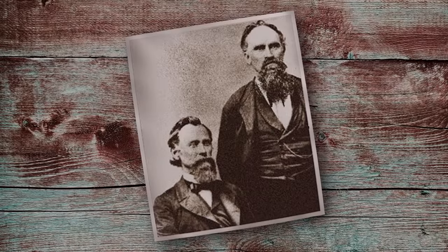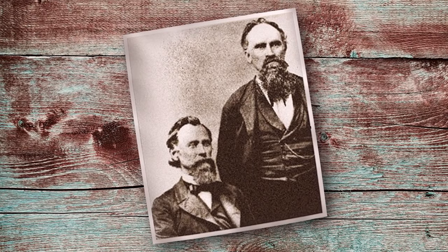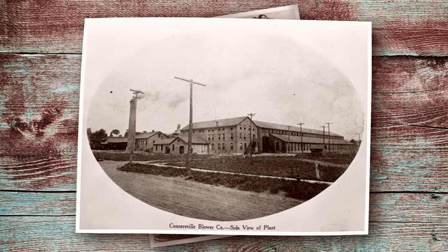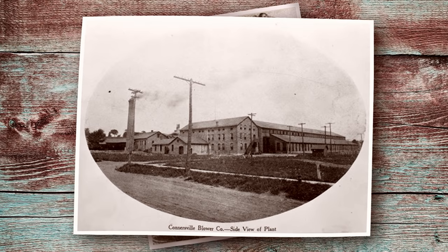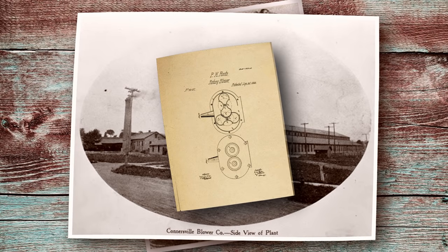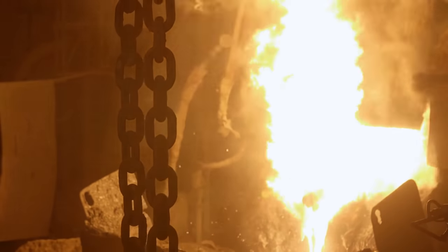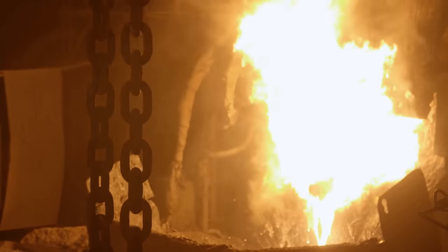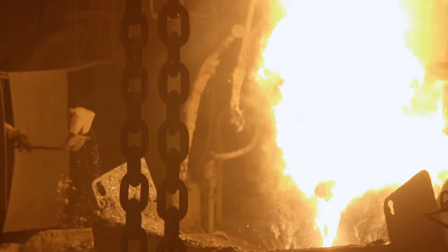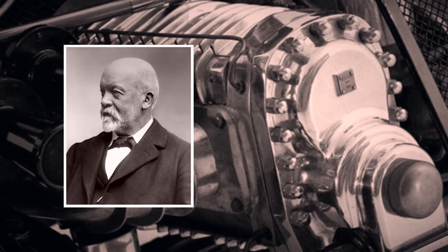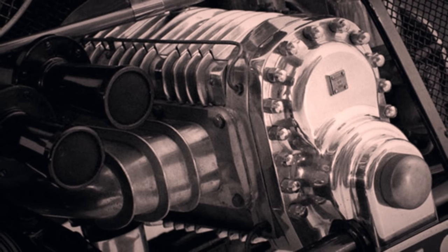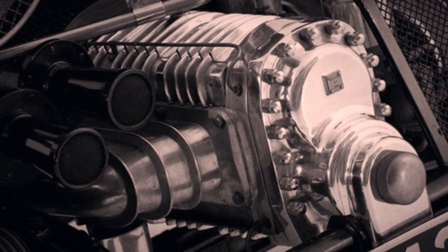In 1859, two brothers, Philander Higley Roots and Francis Marion Roots, founded the Roots Blower Company in Connersville, Indiana. One year later, they would be granted a patent for their air pump design, known as the Roots Blower. While the Roots Blower was initially designed for pumping air into blast furnaces used to melt iron and mine ventilation, in 1900, Gottlieb Daimler of Daimler-Benz was the first to fit a Roots Blower, known as a supercharger, onto a four-stroke engine.